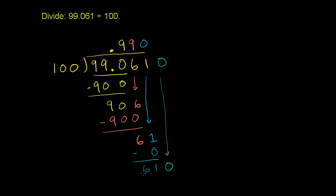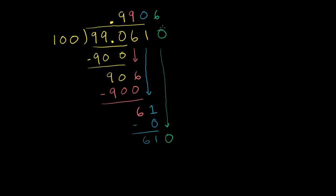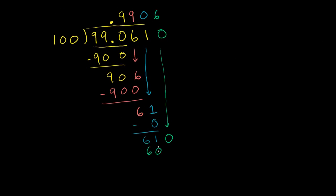100 goes into 610 six times. 6 times 100 is 600. And then we subtract. 610 minus 600 is 10. We don't want to have a remainder, so we keep going. So let's throw another 0 here. And bring it down.